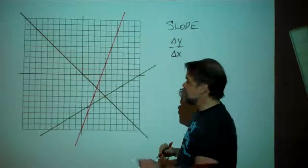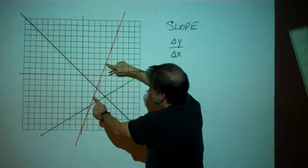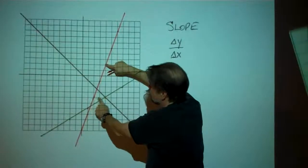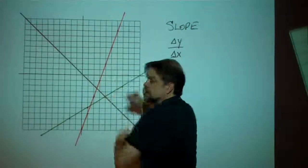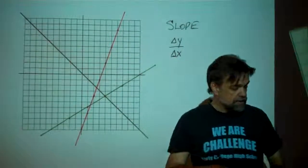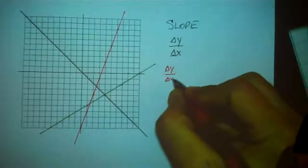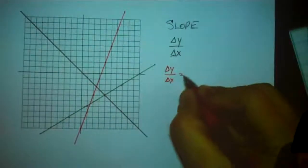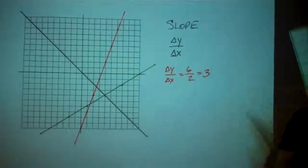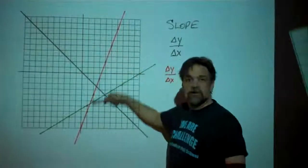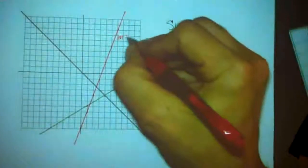So back to our line. Here's one point, here's another point. And so I want to see what the changes are. So my x changed by 1, 2, and my y changed by 1, 2, 3, 4, 5, 6. So when I measure the delta y over delta x, I get 6 over 2, which is 3. So this line has a slope of 3, and I'll write m equals 3.